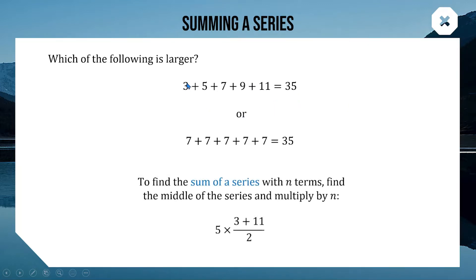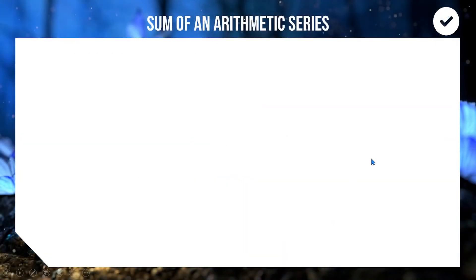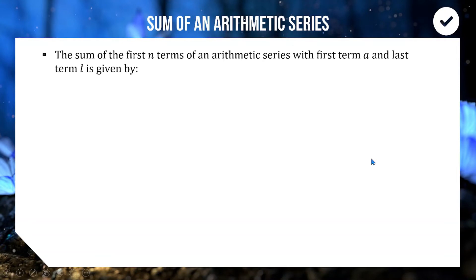You take your first number and your last number, add them and divide by 2 — that's how you find the middle — then multiply by how many terms you have to get the series sum. Writing this as a formula: the sum of the first n terms of an arithmetic series, where a is the first term, l is the last term, and n is how many terms, is S_n = n/2 × (a + l). This value adds first and last, halves them to find the middle, then multiplies by n.